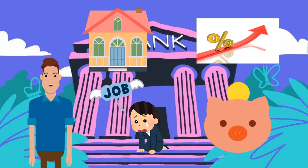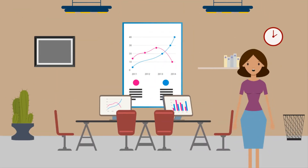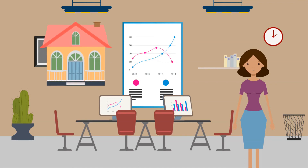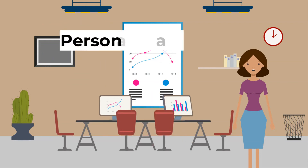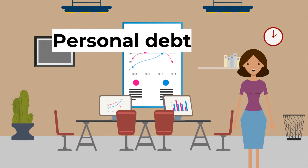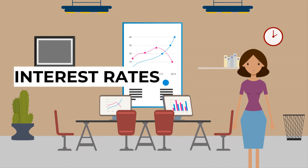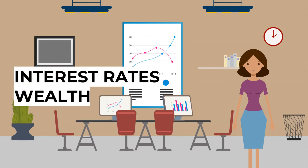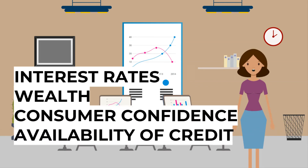Because of increased opportunities to save, consumers sometimes borrow money to finance additional expenditure. Maybe they are finally able to buy a house, or perhaps they wish to finance a car. They can then make loan repayments over time from their future earnings. Personal debt is the total stock of money borrowed and yet to be repaid by a person or household. What determines how much we borrow? Interest rates, wealth, consumer confidence, and availability of credit.